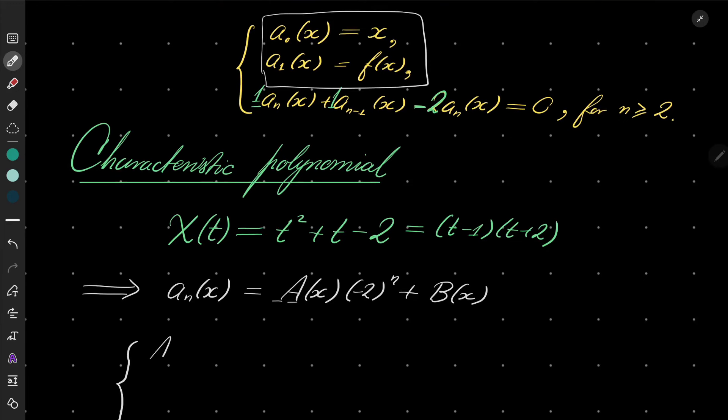If I put n to be zero, I have a(x) + b(x) equals just x—that's one equation. The second equation: if I put n to be one, I have -a(x) + b(x) equals f(x).